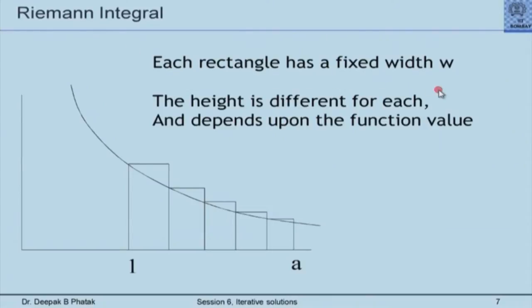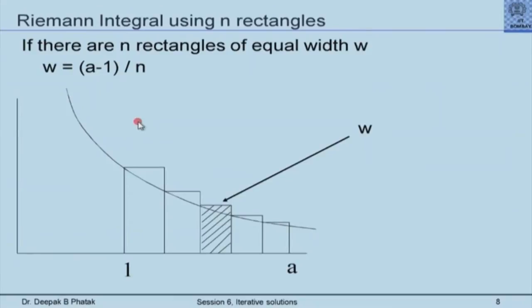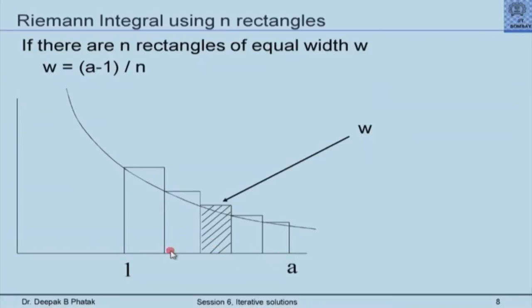Each rectangle has a fixed width w; the height is different in each case and depends upon the function value. We illustrate this by showing the i-th rectangle and demonstrating how its area is calculated. We would like to set up an iteration moving from i = 1 (the first rectangle) to subsequent rectangles. If there are n rectangles of equal width w, then w is simply (a − 1) / n. The width of any one rectangle is (a − 1) / n.